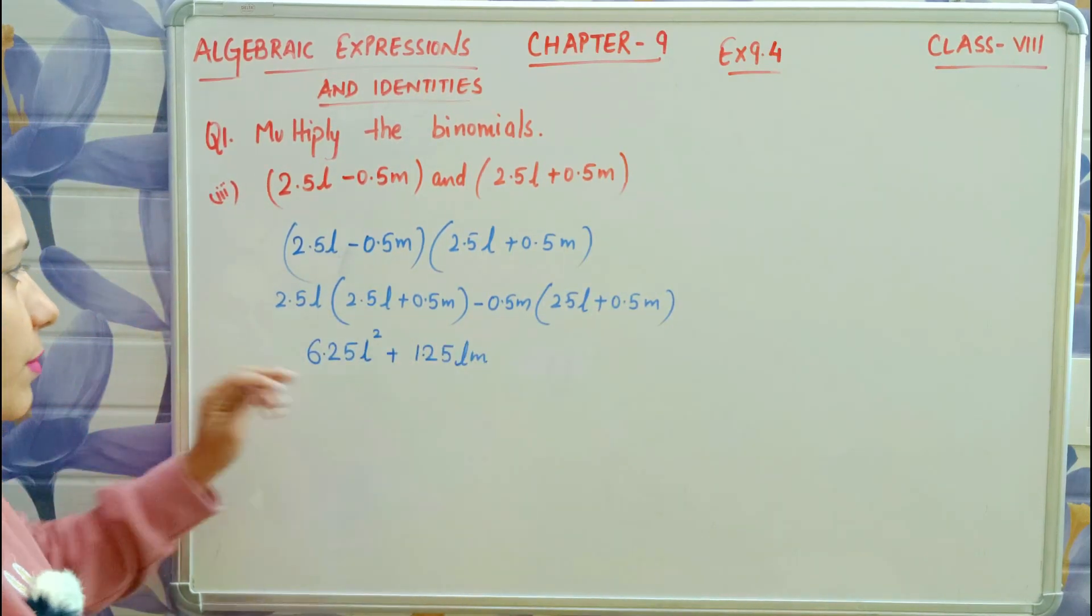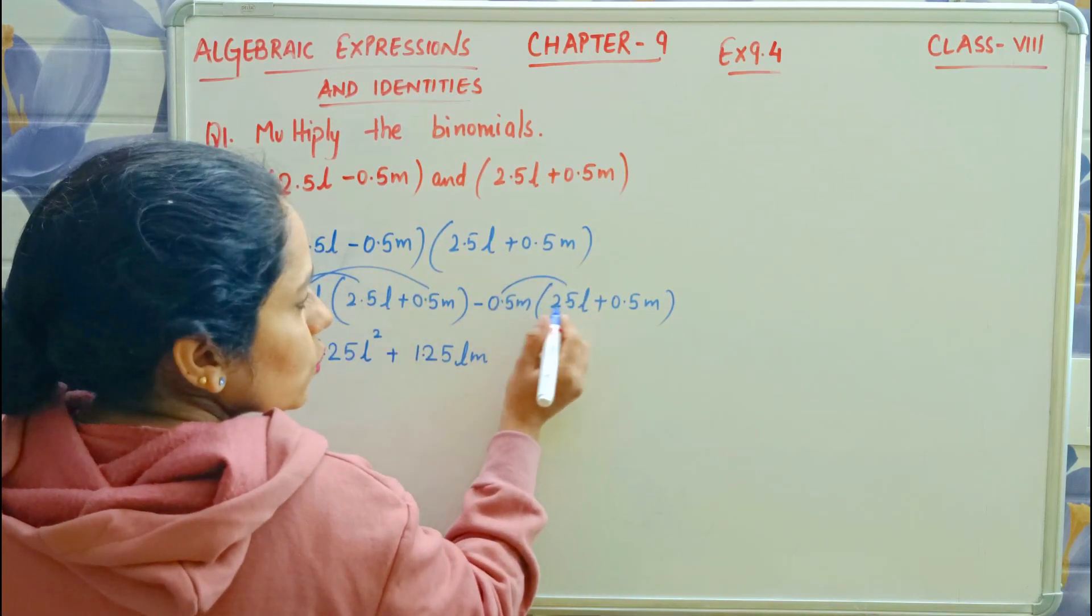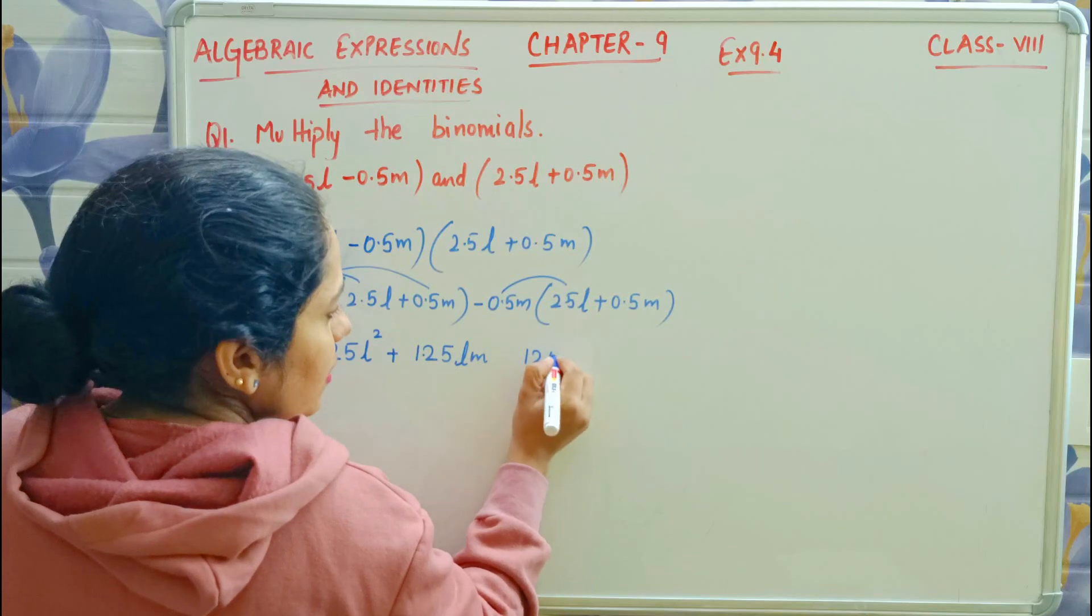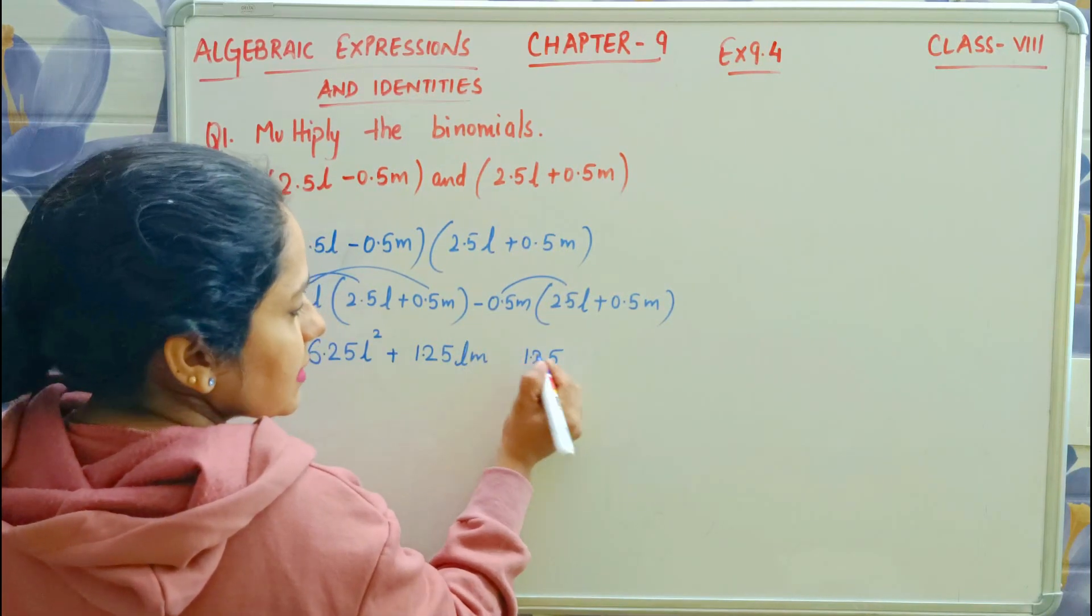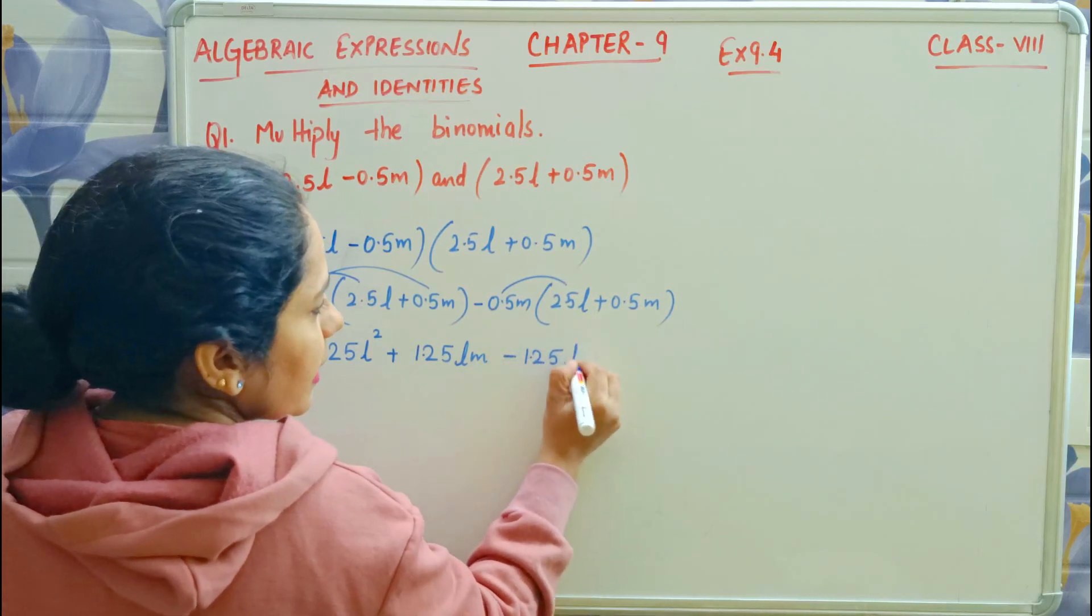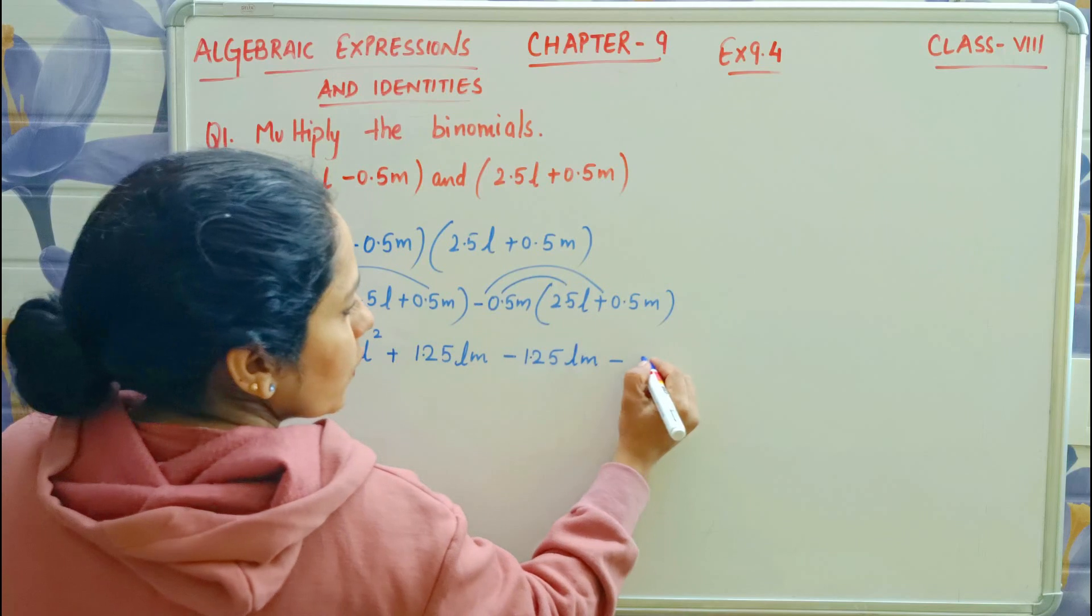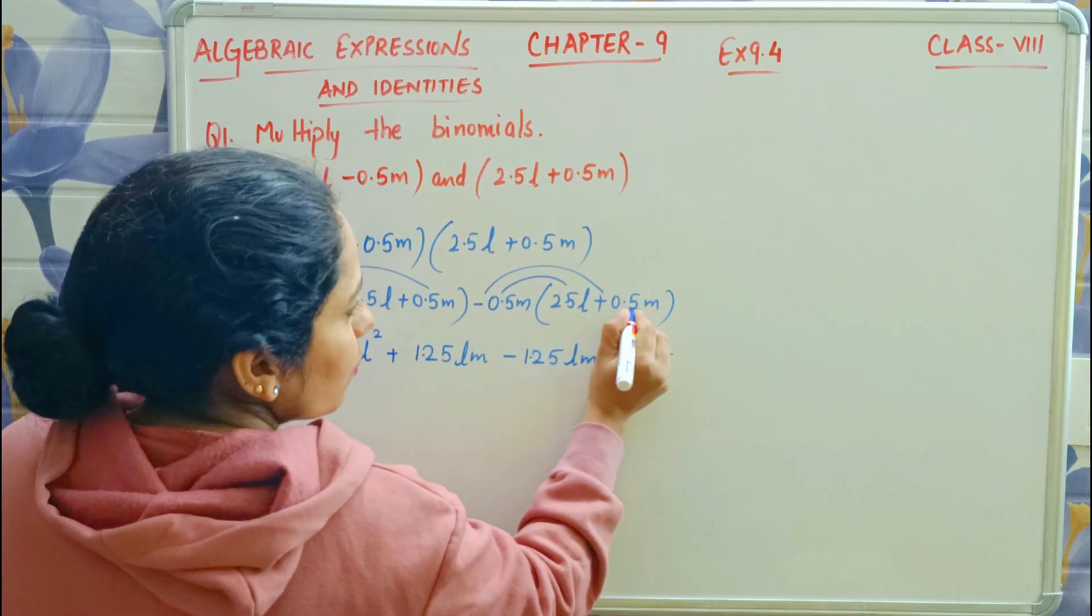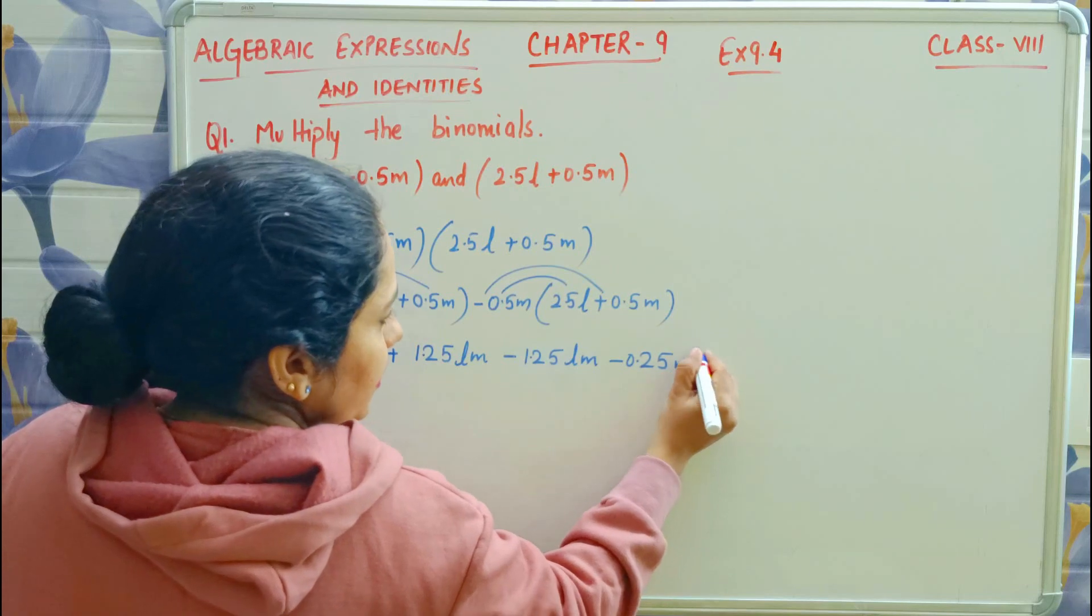We've multiplied this with this, and this with this. Next, again, 25 times 5 is 125. One digit after point, one digit, two digits total, so one, two - decimal here. Sign is minus LM. Minus plus minus. 5 times 5 is 25. Decimal point 5, point 5 means before two digits. M times M is M squared.